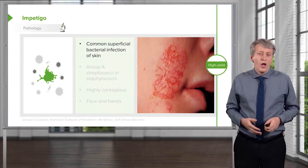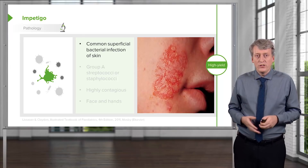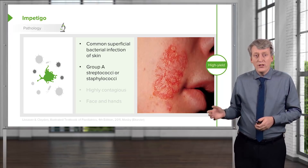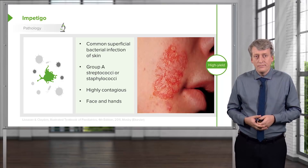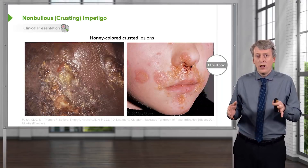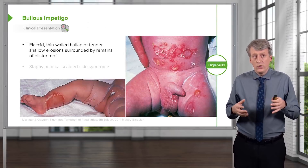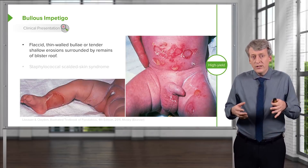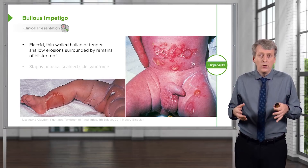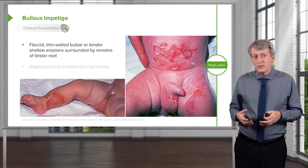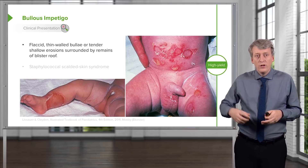Moving on to another common infection of skin: impetigo. We see this a lot in children. This is a common superficial bacterial infection usually caused by group A strep or staphylococcus. It's highly contagious and usually starts on the face and hands then spreads. Patients classically have a honey-colored crusted lesion. There is also a more significant form called bullous impetigo, also caused by staph and group A strep, seen more commonly in people with less rigorous bathing. It causes flaccid, thin-walled, tender shallow lesions surrounded by the remains of the blister roof that often pops.